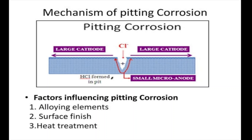At that point, the small pit region behaves like an anode and the large open surface area behaves like a cathode. So there is a galvanic cell-like thing — that is, an electrochemical reaction that starts spontaneously. The factors influencing pitting corrosion are the alloying elements, the surface finish, and the heat treatment process. These are the three major operating criteria which influence the rate of corrosion during the pitting corrosion process.